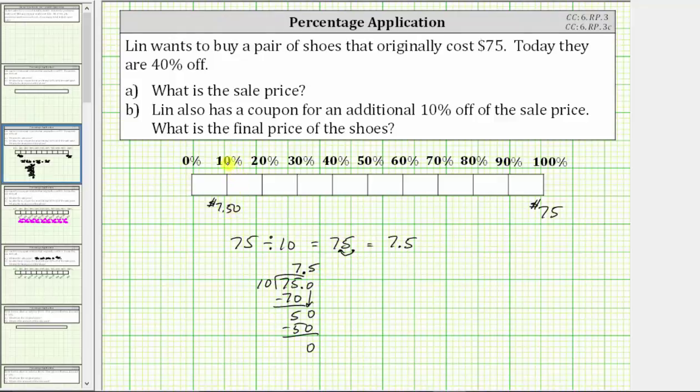And now each time the percent increases by 10%, we add $7.50. $7.50 plus $7.50 is $15, which is 20% of 75. Continuing, we get the following completed tape diagram.